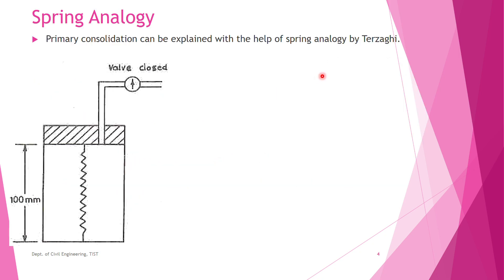Primary consolidation can be explained with the help of a spring analogy given by Terzaghi. We use an analogy with a spring and a container. The container is 100 mm in height, filled with water, and has a piston that can be moved up and down. Between the piston and the bottom of the container there is a spring. There is also a valve — when the valve is open, water can go out; when closed, water cannot escape.